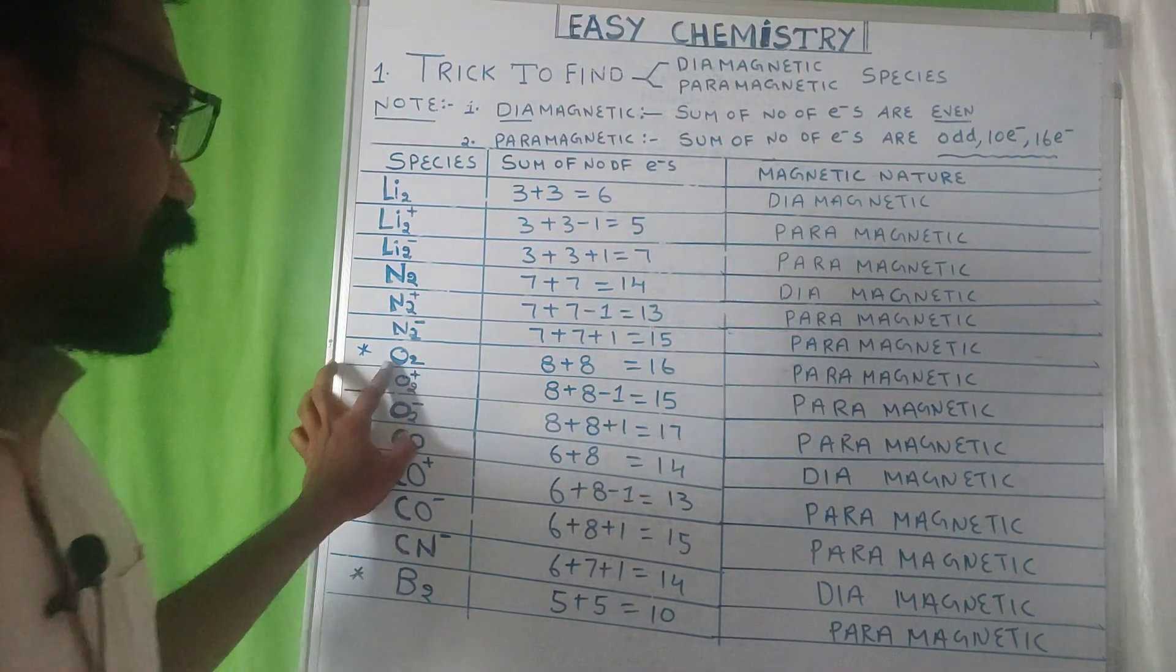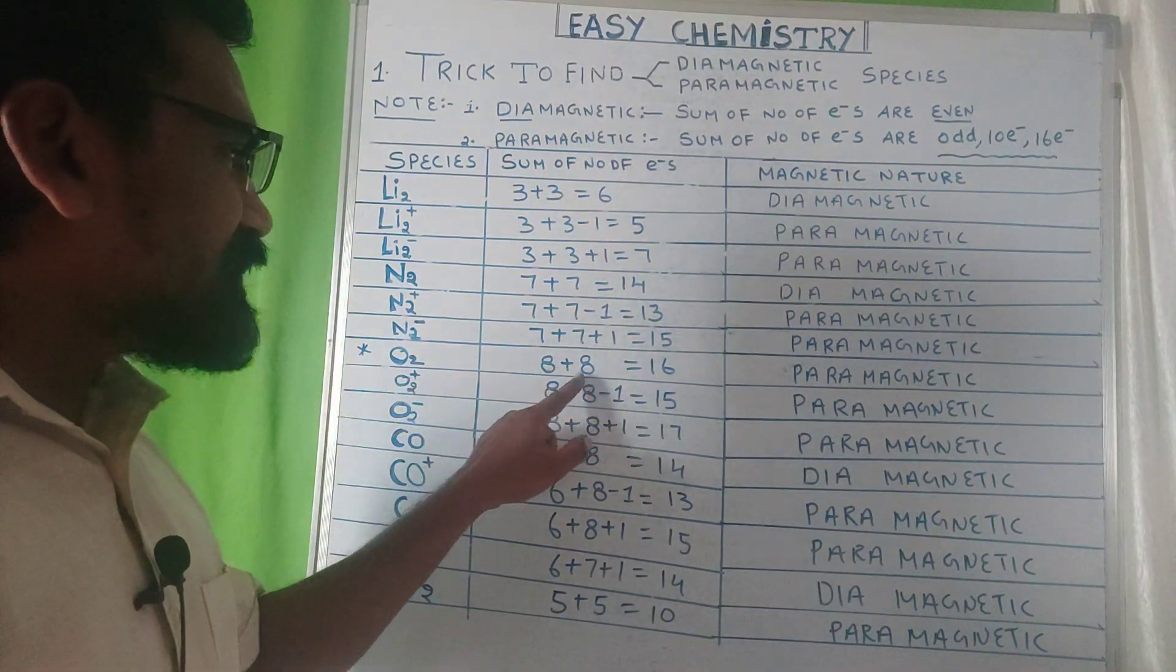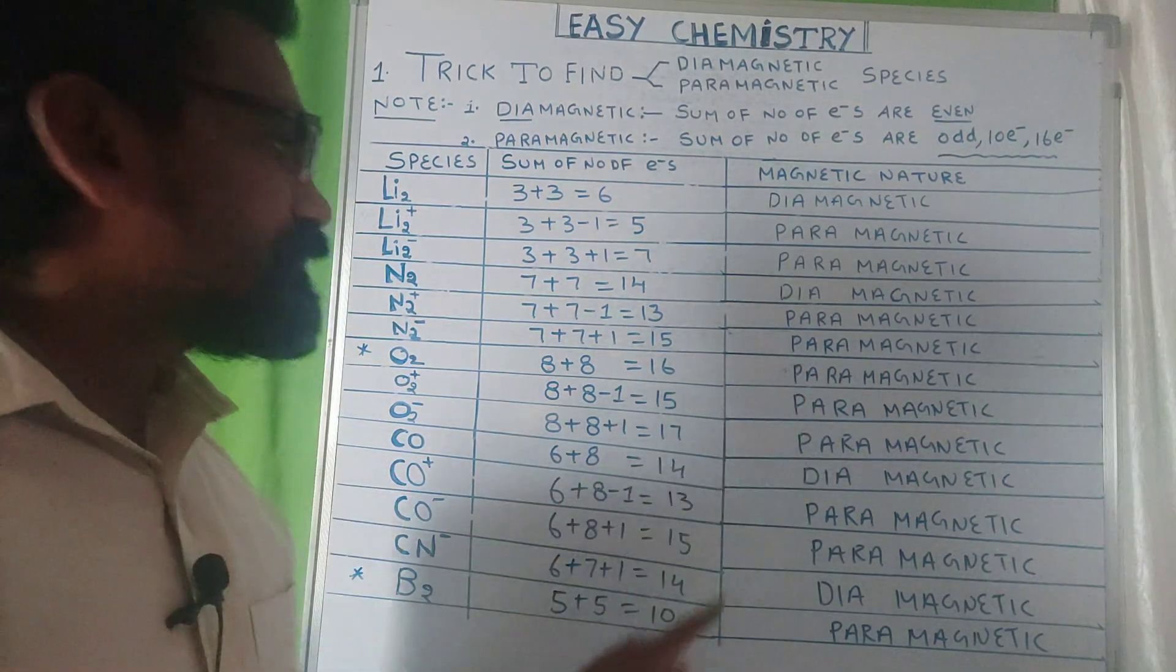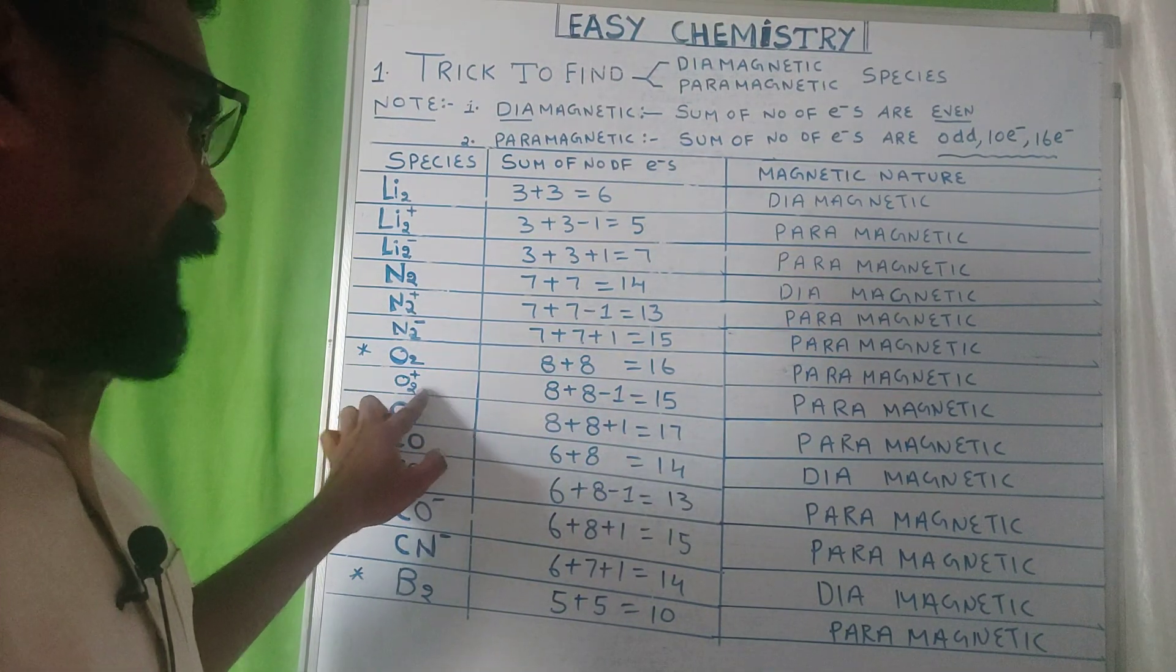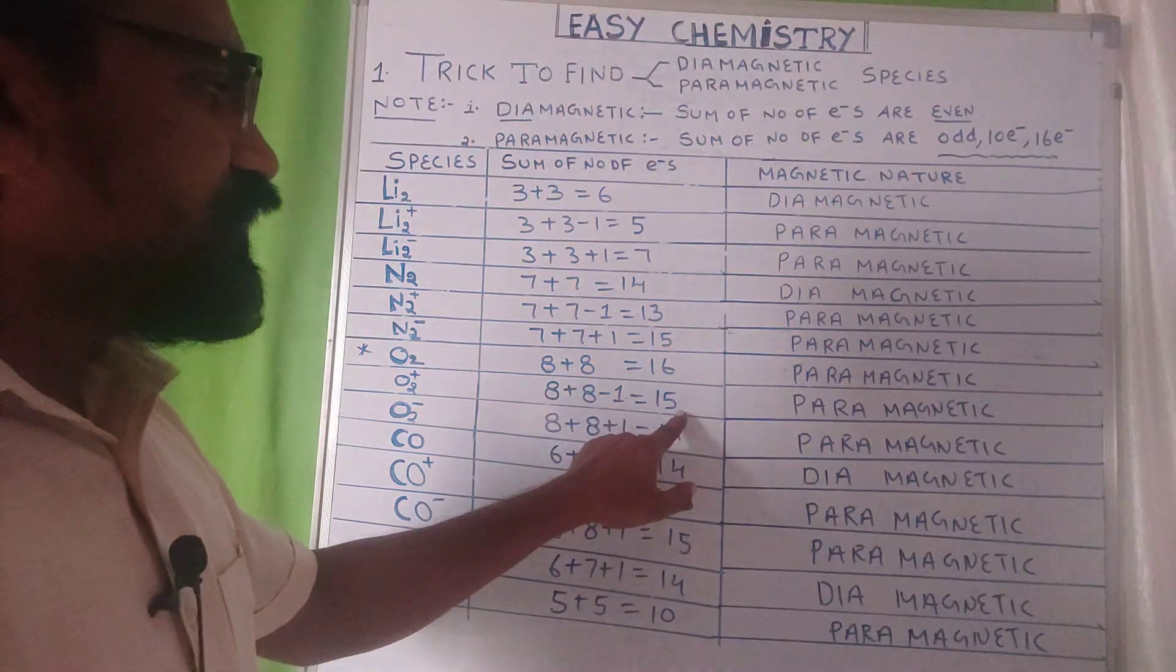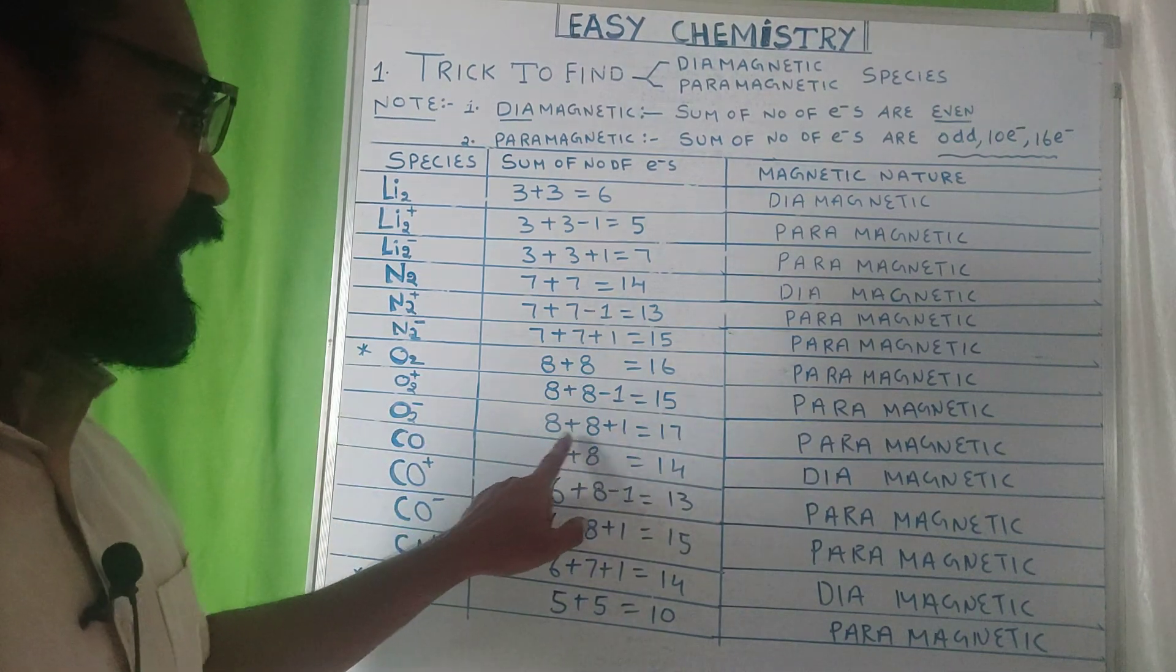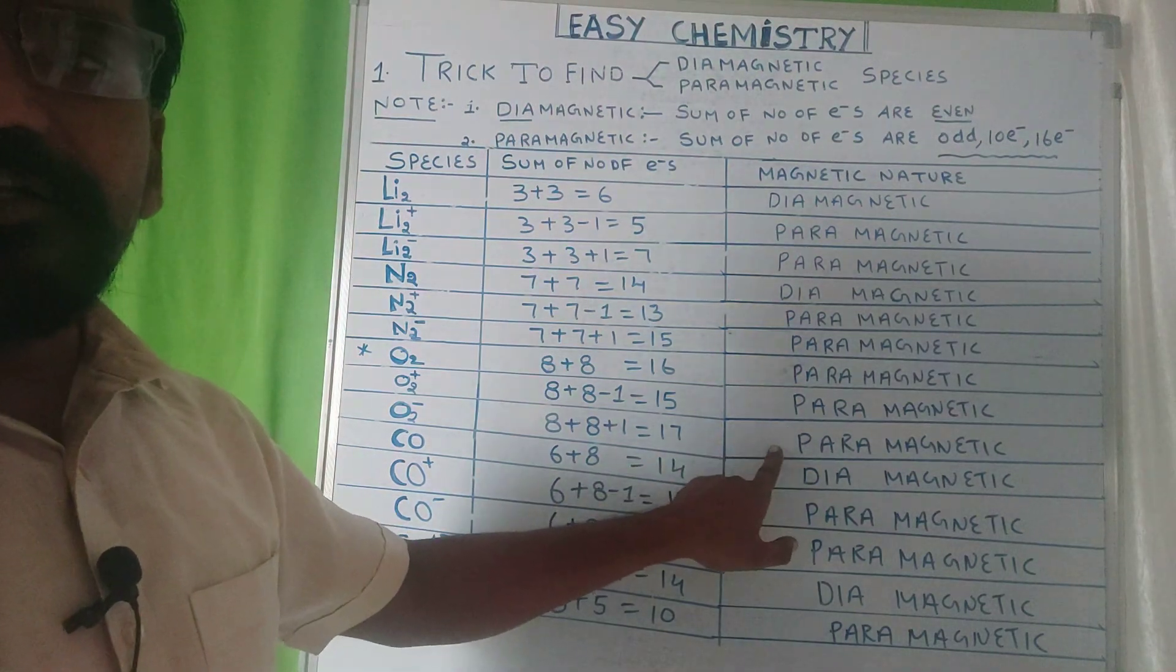O2 is most important because 8 plus 8 equals 16, so it has paramagnetic nature according to MOT theorem. If you see O2 plus, 8 plus 8 minus 1 equals 15, paramagnetic nature. O2 minus: 8 plus 8 plus 1 equals 17, paramagnetic nature.